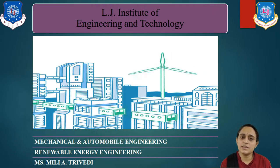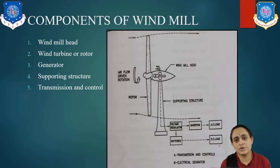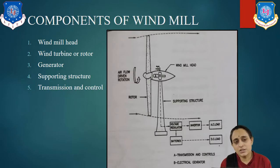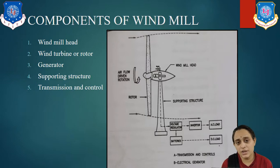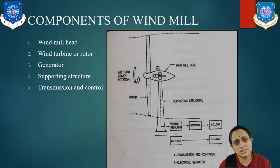Let us study about the components of wind turbines. There are a total of five components: windmill head, wind turbine or rotor, generator, supporting structure, and transmission and control, as you can see in this diagram. First of all, we have to understand what is a windmill head. It gives mechanical support to the rotor, and the housing of the rotor is known as the windmill head, in which all the systems are mounted.